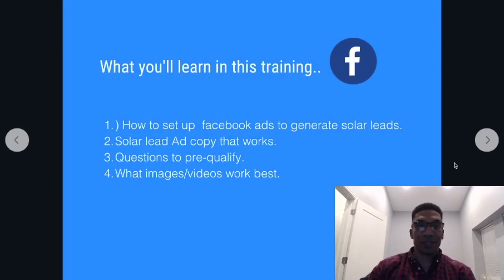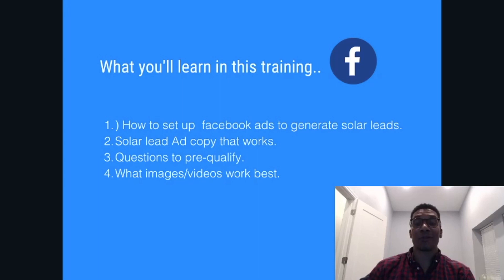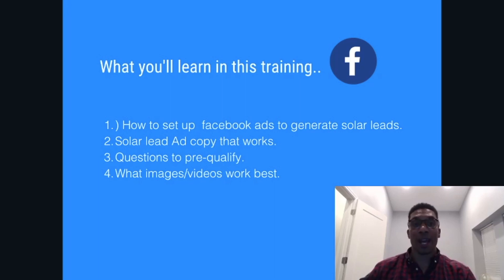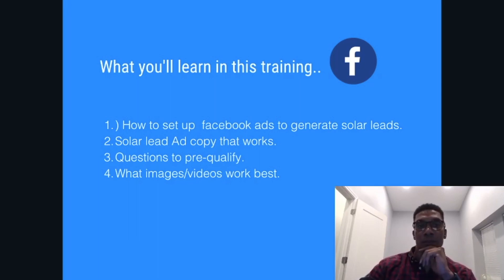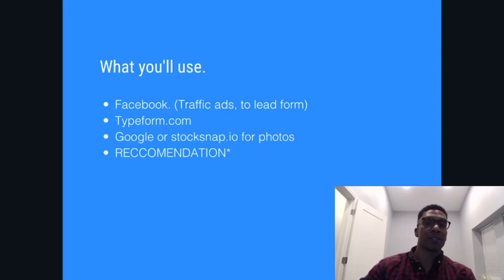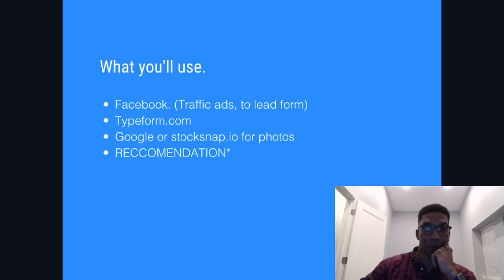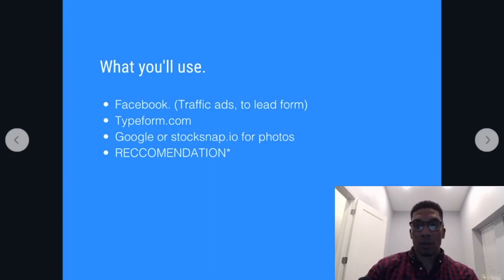What you'll learn today: how to set up Facebook ads to generate solar leads. I'm going to give you solar lead ad copy that's proven and actually works — about three different ad copy versions for you to copy and swap out your own information, city names, and so forth. Then, questions to pre-qualify homeowners on the lead form, and also what videos or images work best to get engagement, be eye-catching, and grab attention. We'll use Facebook traffic ads sending them to a lead form, TypeForm for capturing answers, and Google Snap.io for stock photos and videos.